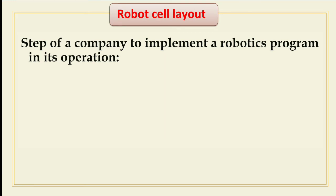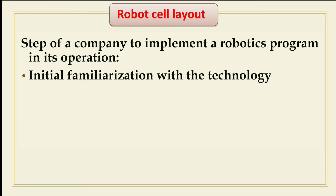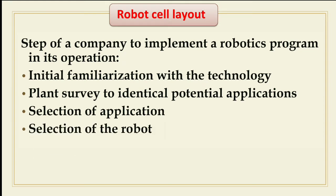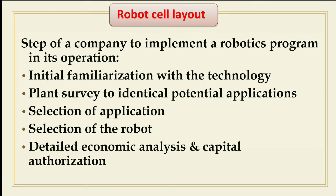One aspect is related to the design of the robot work cell, which may consist of more than one robot and more than one machine. The other is related to the control system that coordinates activities among various components of the work cell. Steps for a company to implement a robotic program include: familiarization with the technology, plant survey to identify potential applications, selection of application, selection of robot, and detailed economic analysis.